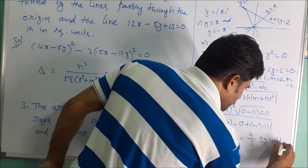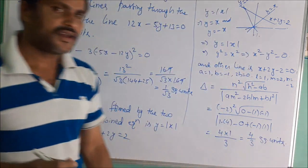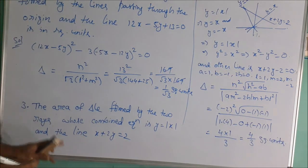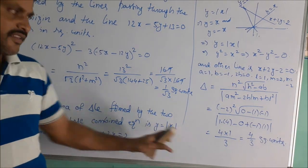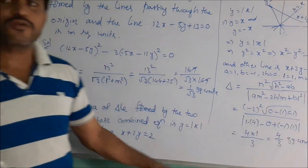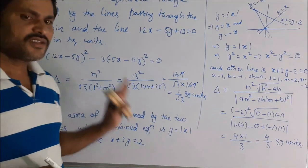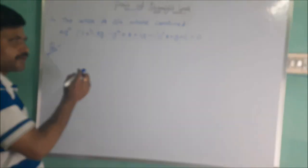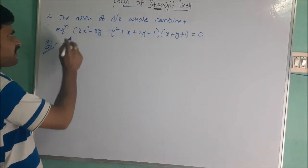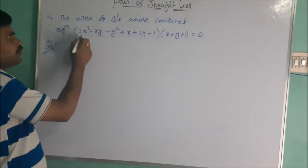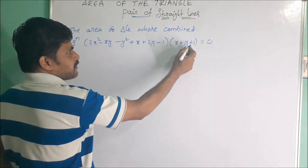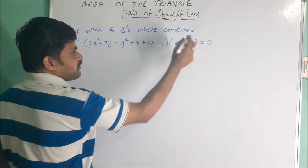The answer is 4/3 square units — the area of the triangle formed by the two rays y = |x| and the straight line x + 2y = 2. The fourth problem: find the area of the triangle whose combined equation is 2x² − xy − y² + x + 2y − 1 = 0, and the other straight line is x + y + 1 = 0.